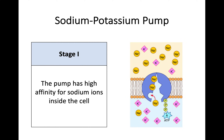Breaking this into stages — the diagrams on the right-hand side will help here. First, this pump has a high affinity for sodium ions inside the cell. Affinity means they want to bind — there's a space for those sodium ions to come across and bind to the pump, as you can see in the diagram.